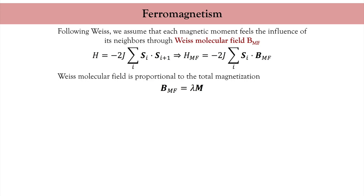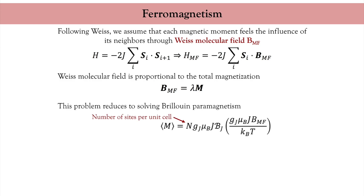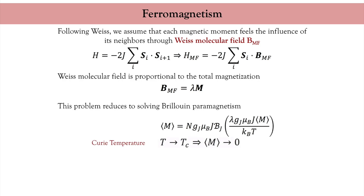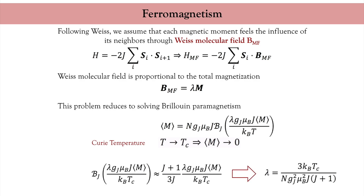What we need to solve is truly a self-consistent problem. The total magnetization of the ferromagnet can be computed using statistical physics techniques, as seen in the previous lecture, and it reduces to a formula very similar to that obtained for Brillouin paramagnetism — except that the magnetic field is replaced by the Weiss molecular field. From this formula, one can compute the Curie temperature by taking the limit when the magnetization vanishes, which provides an explicit expression for the scaling parameter lambda as a function of Curie temperature.